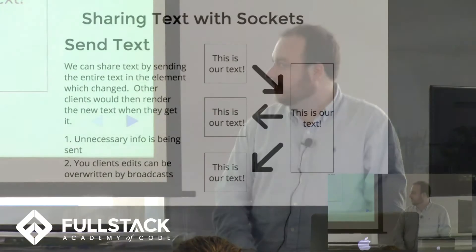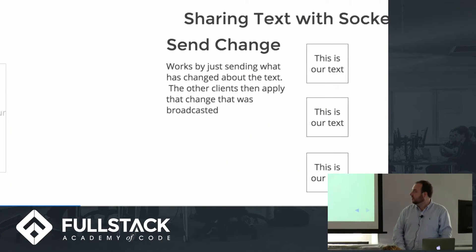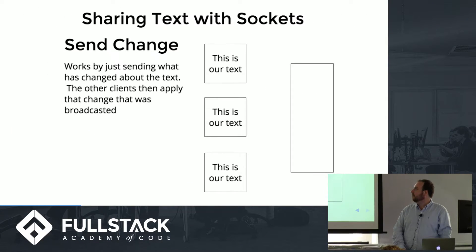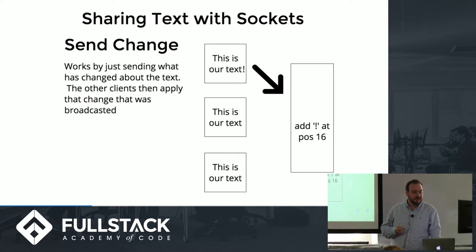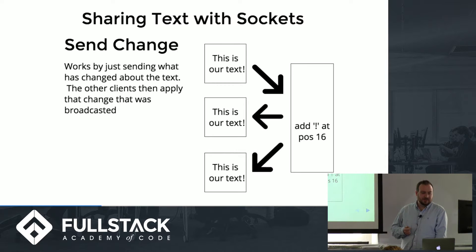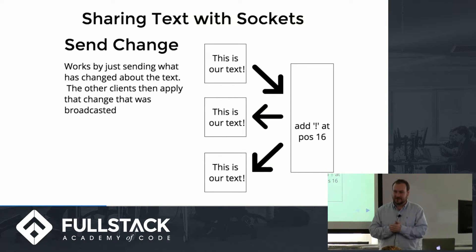A way to get around this is instead of sending the whole text, you just send the change. So when I make my exclamation point change, it says: I added an exclamation point at position 16. This gets broadcast out to everyone else with the exclamation point there. Problem solved — but not quite.